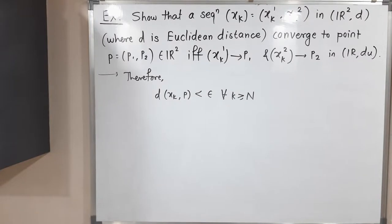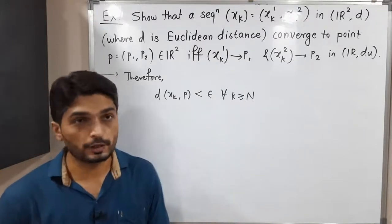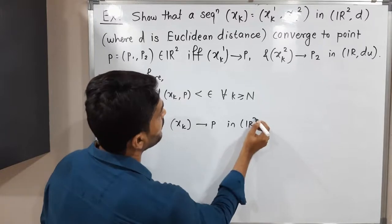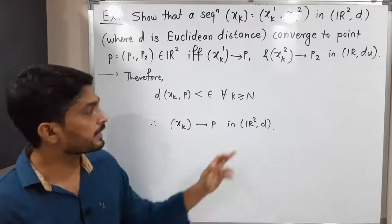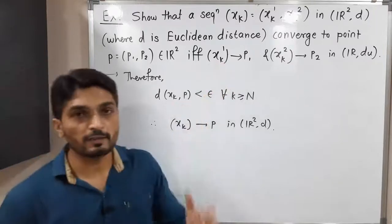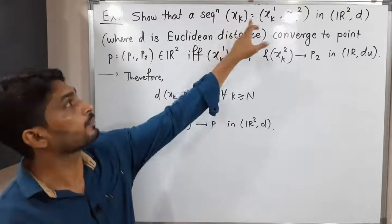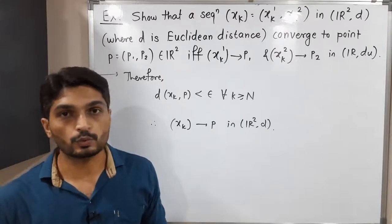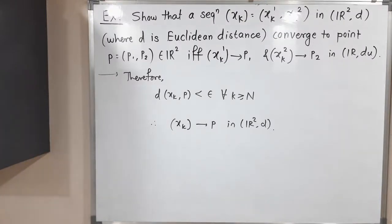Therefore, d(xk, p) less than epsilon is true for all k greater than or equal to N. So the sequence xk converges to p in R² with the Euclidean metric d. We started with xk1 converges to p1 and xk2 converges to p2, and finally we obtained that the sequence xk, defined as (xk1, xk2), converges to point p = (p1, p2). The converse part is also complete, and therefore the full result is proved.